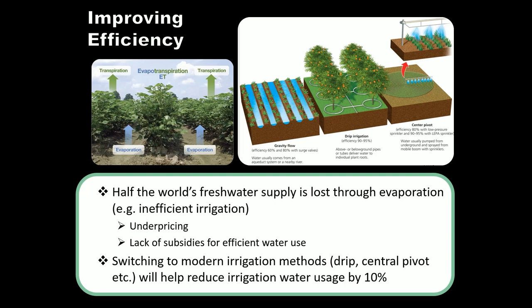However, there is a lack of incentive in some places to implement these systems because water is cheaper than it probably should be, and there aren't many government subsidies, tax breaks, or similar supports for implementing water-efficient technologies. With that, we've talked about water scarcity — why water is scarce, how it's more scarce in some areas than others, and some of the possible solutions for addressing that water scarcity.